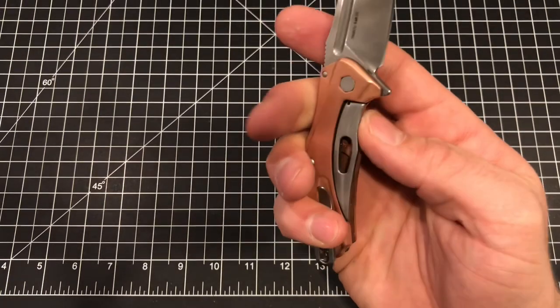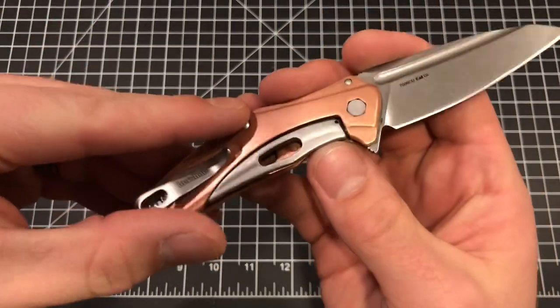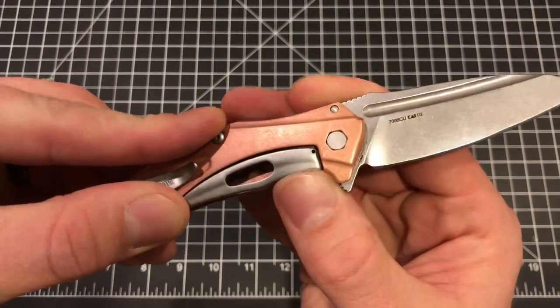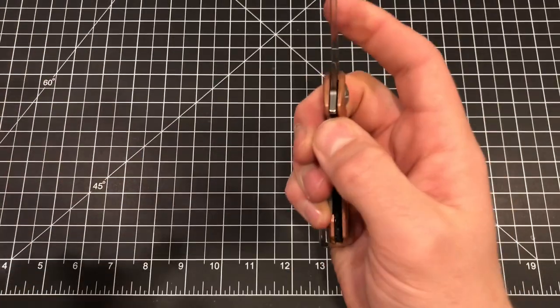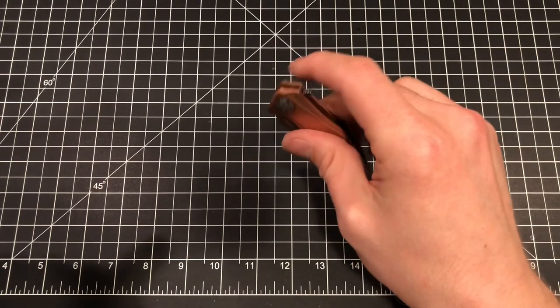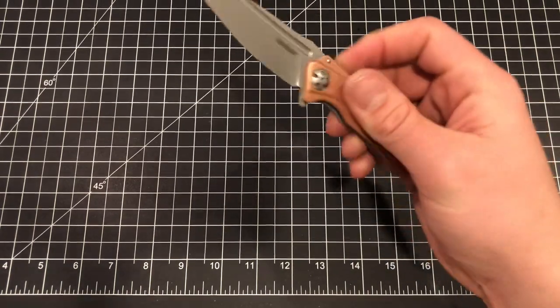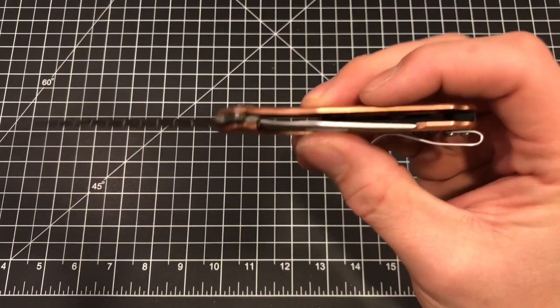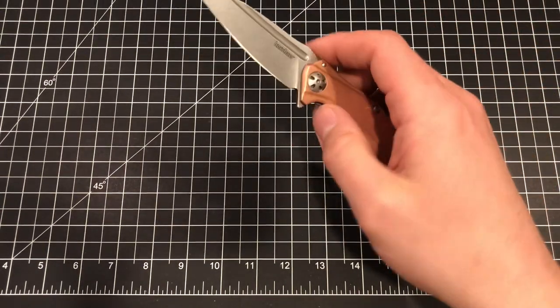And it's got a built-in over travel protection. So no matter how hard you push on the subframe lock, it will never go beyond flush with the scale. So that's nice. There's no liners, it's just solid copper scale on one side and the subframe lock on the other, which is perfectly fine.